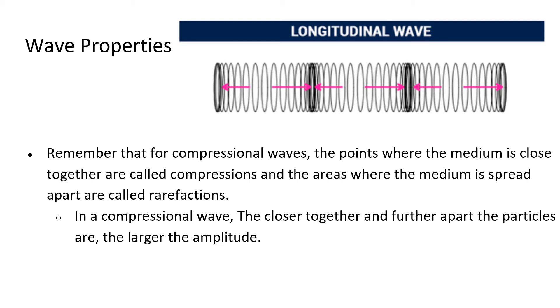In this type of wave, the closer together they get and the further apart they get refers to a greater amplitude. So when you look at a transverse wave, it's the height from the center point. For the compressional wave, it's how close they get and how further apart they get that indicates amplitude.